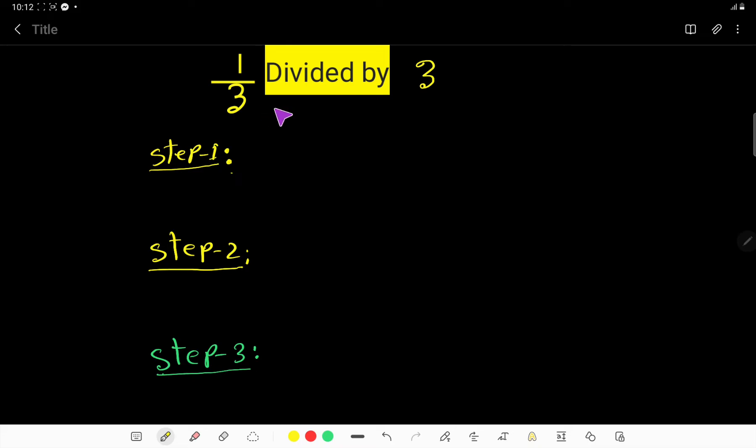1 over 3 divided by 3. In the first step, I will translate this expression. 1 over 3 divided by - this division is the same - then we have 3.